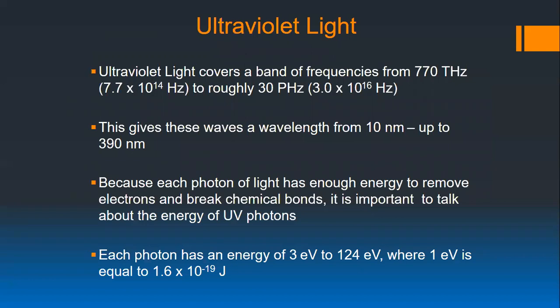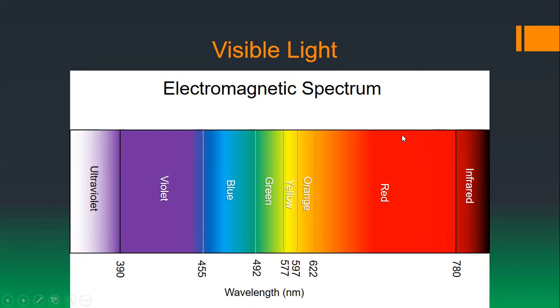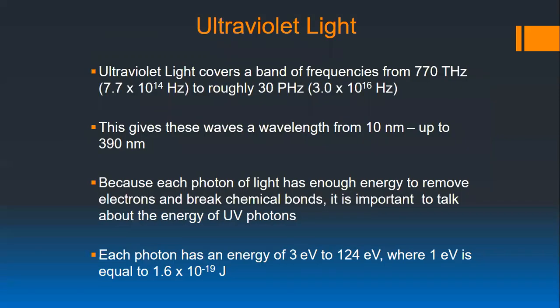Now we get to ultraviolet. We've gone from infrared to visible, and now the wavelength is getting smaller, the frequency is getting higher, and the energy per photon is getting larger. Ultraviolet light is the first part of the electromagnetic spectrum that is ionizing radiation — this is important because it has enough energy to break chemical bonds. Visible light can create photochemical reactions in the eye, but now with ultraviolet light we can damage organic matter — specifically, we can alter the chemical bonds in DNA.